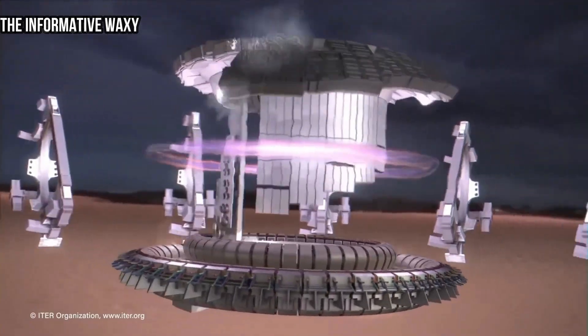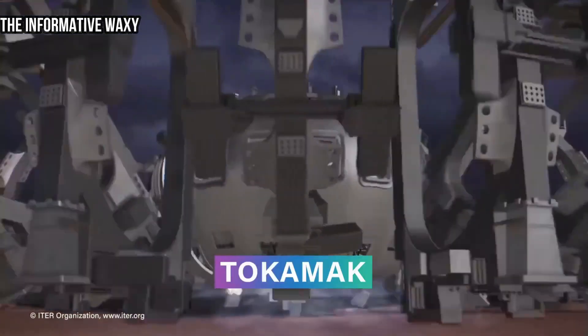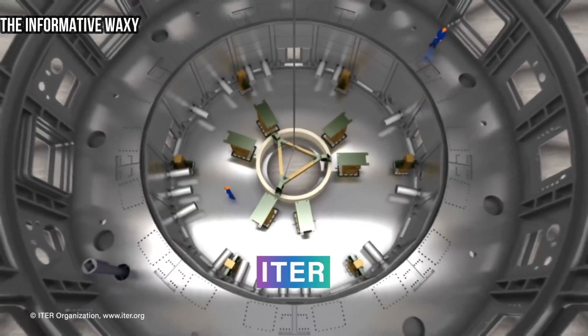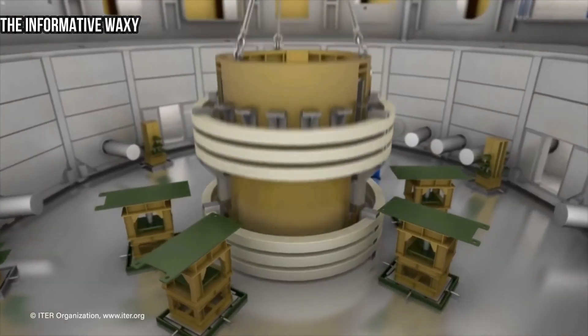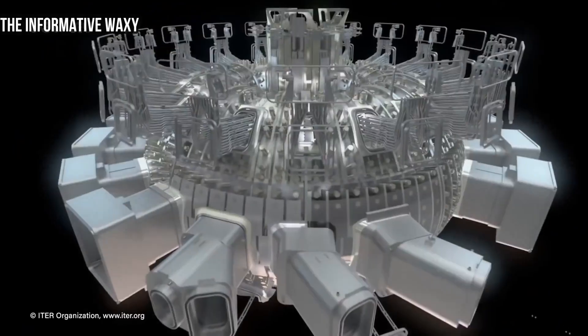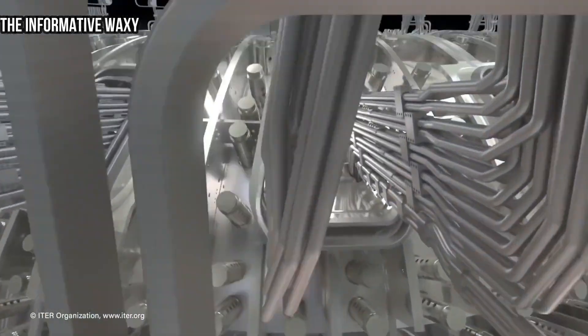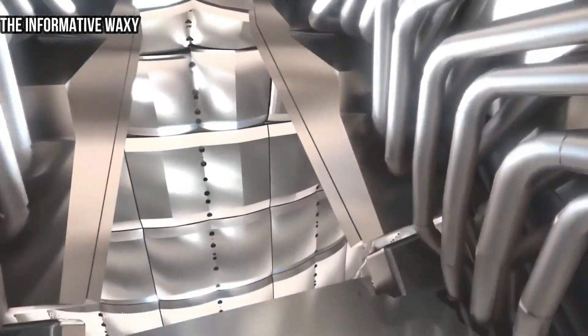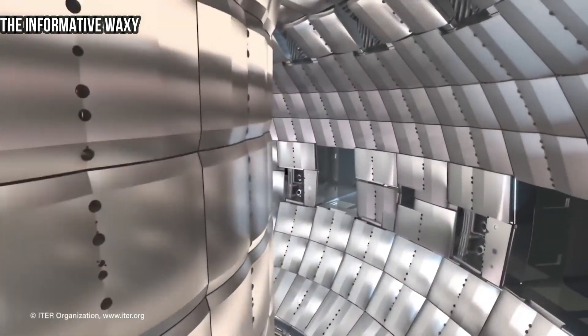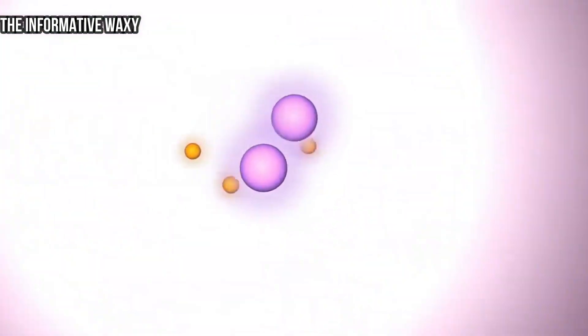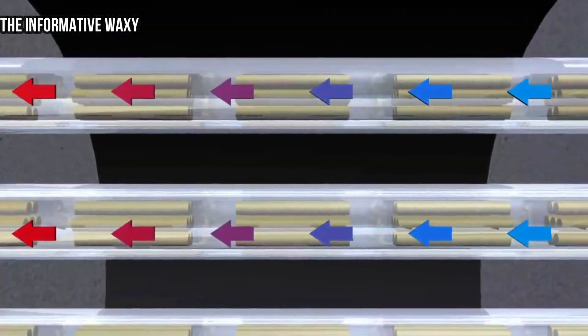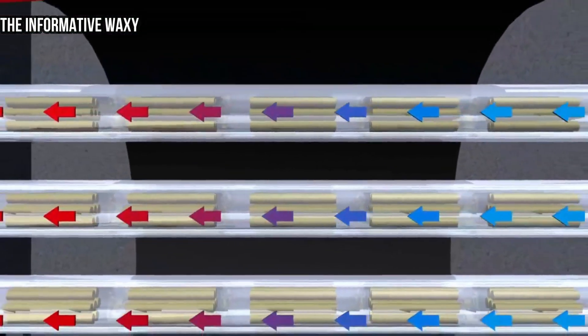The amount of kinetic energy needed to bring the fuel atoms close enough is known as the Coulomb barrier. Ways of providing this energy include speeding up atoms in a particle accelerator, or heating them to high temperatures.